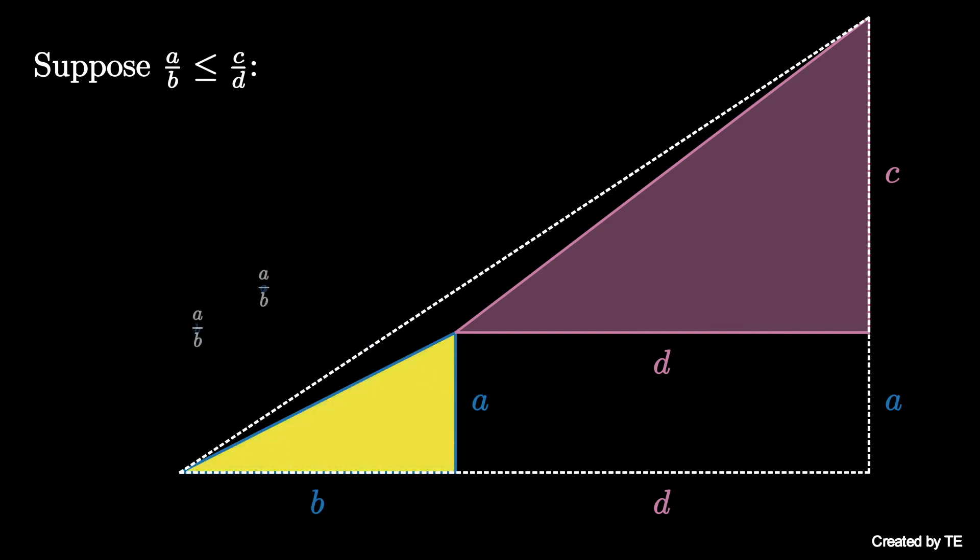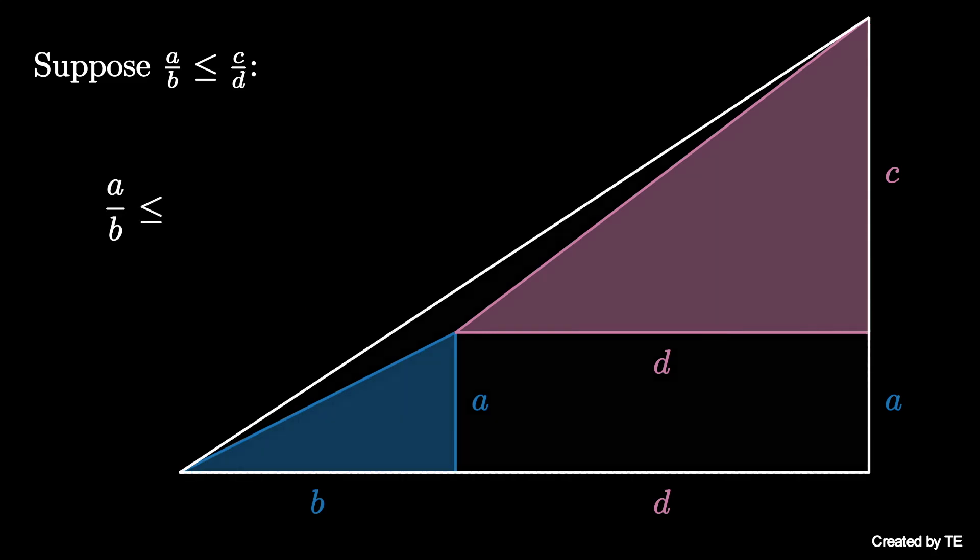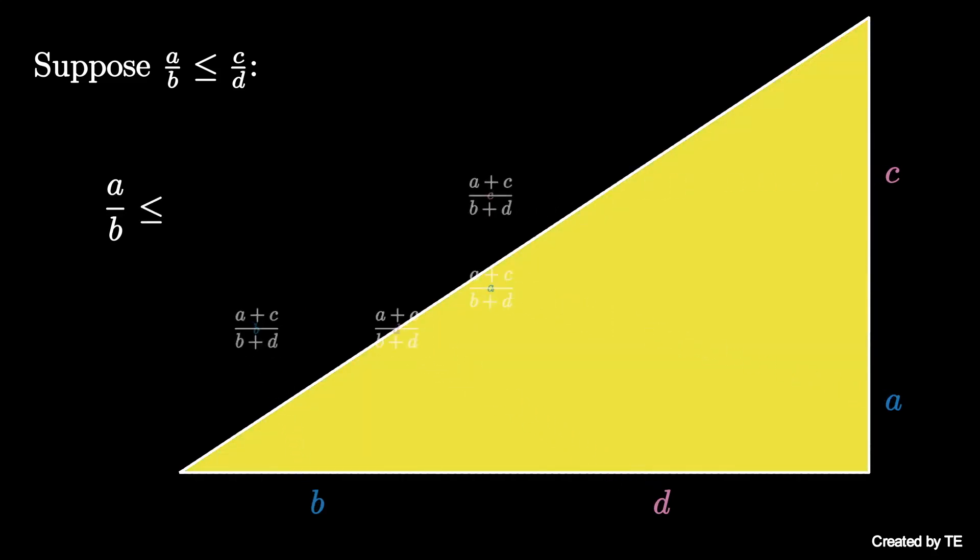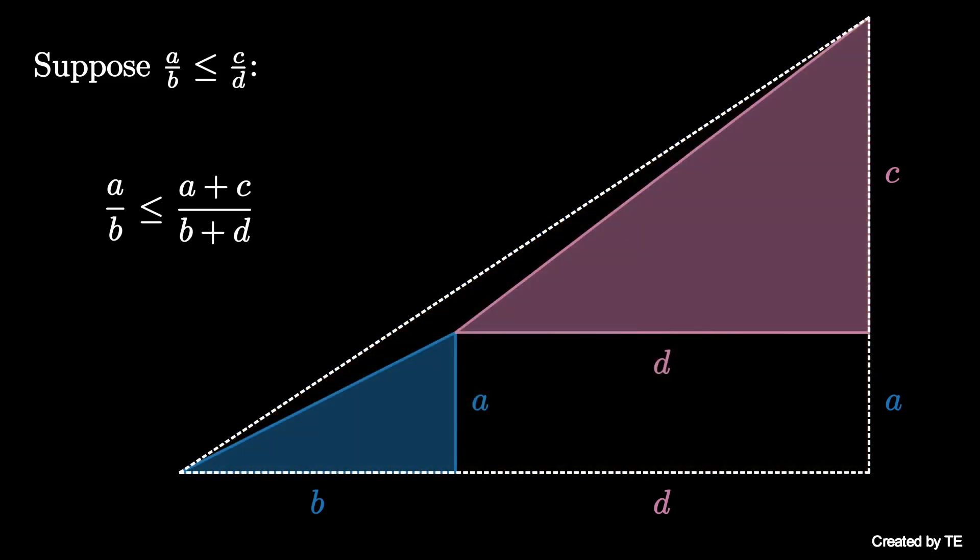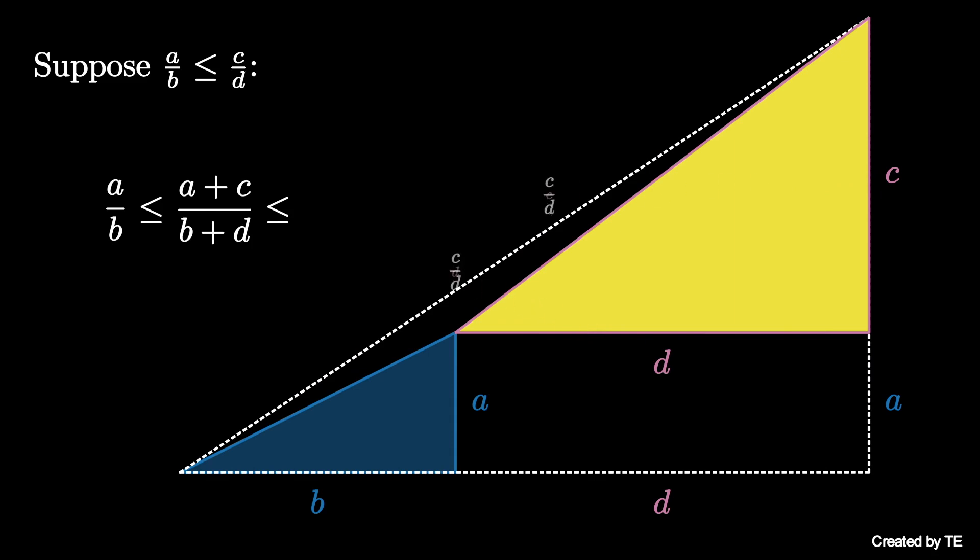Now comparing the slopes of the hypotenuses of these three triangles reveals that A over B is less than or equal to the slope of the big triangle, which is A plus C over B plus D, and that in turn is less than or equal to the slope of the top right triangle, which is C over D.